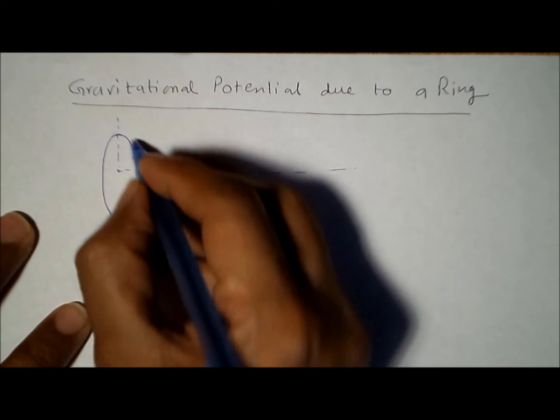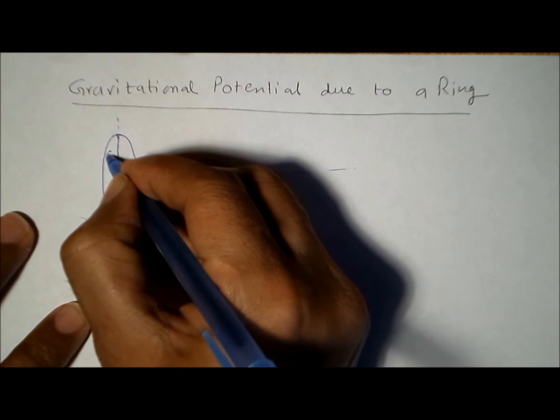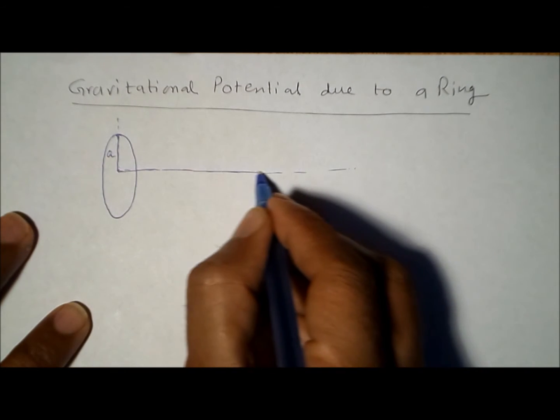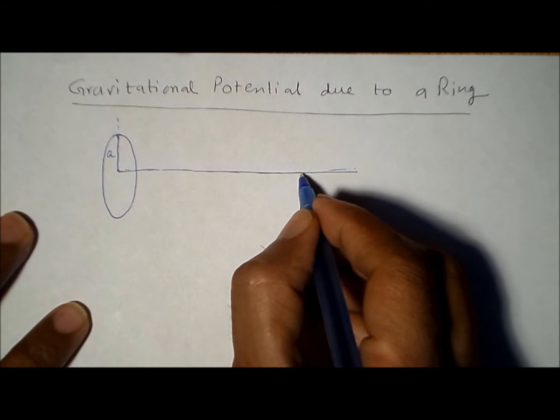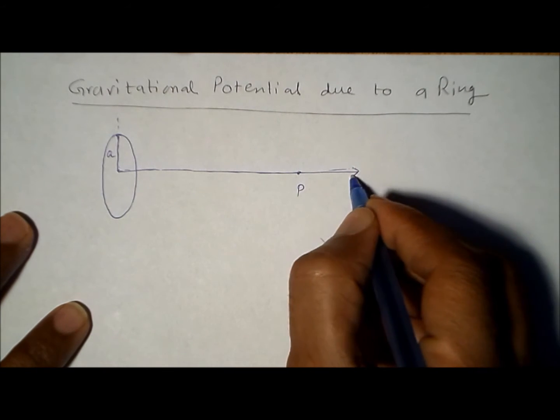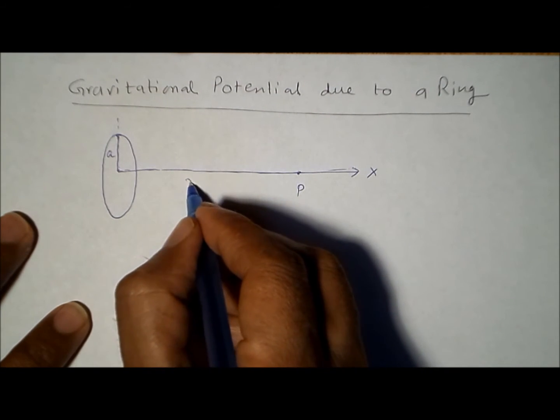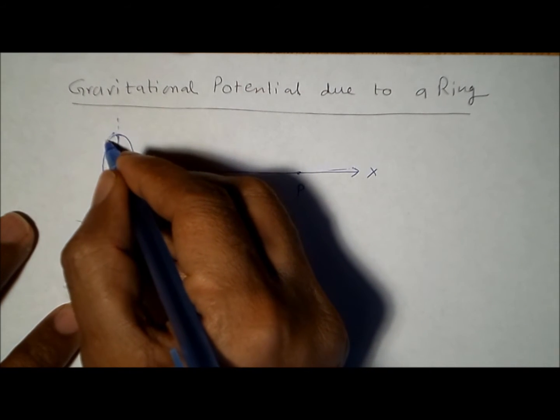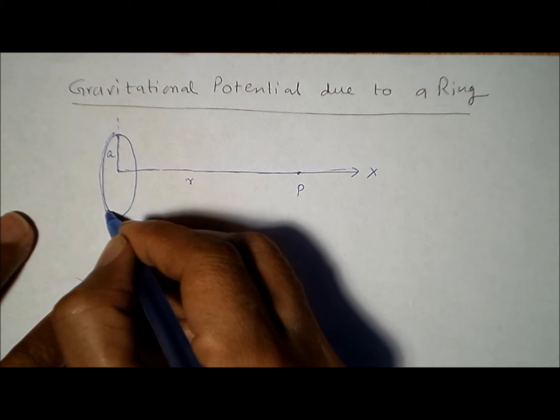The ring has a radius of a, and we want to find out the gravitational potential at a point P on the x-axis, which is at a distance r from the center of the ring.